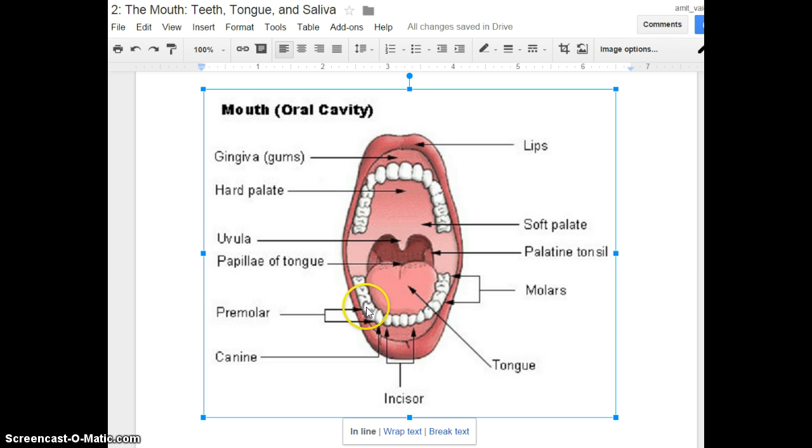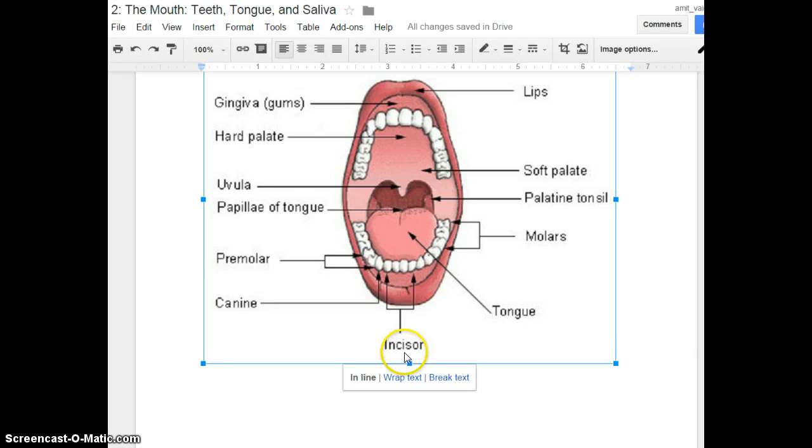We even have things called premolars, which we'll study. Of course, we have lips as well. I don't know if you could say the lips are really as much part of the digestive process. Certainly you could make a case for them being part of the digestive process. But food enters your mouth, and as soon as it hits your tongue, your teeth, your saliva, the digestive process has begun.